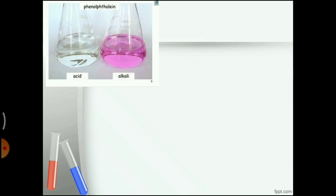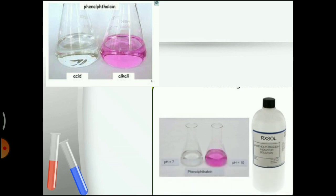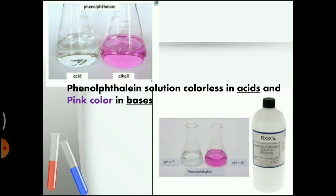Now, the test with phenolphthalein solution. If you pour a few drops of phenolphthalein solution into acids, it cannot change its color — no color change with acids. If you pour a few drops of phenolphthalein solution into alkalis, the color of the solution turns pink. Phenolphthalein gives pink color with bases only, but does not change color with acids — it is colorless with acids.